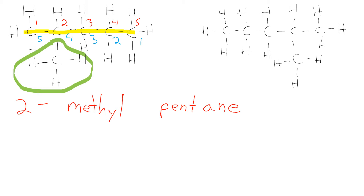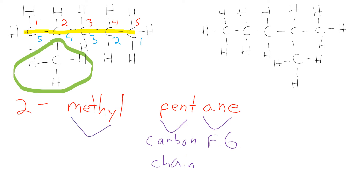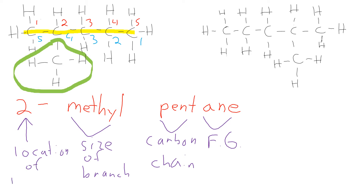Each part of the name describes a specific feature: the A-N-E ending tells us the functional group — an alkane; the pent tells us the carbon chain length; the methyl signifies the size of the branch — one carbon; and the number two out front describes the location of the branch. You see this pattern repeated over and over again for every organic compound.